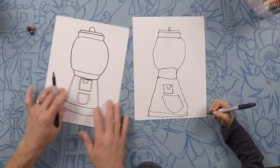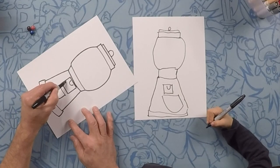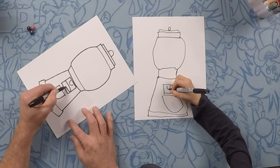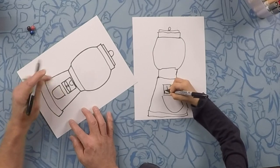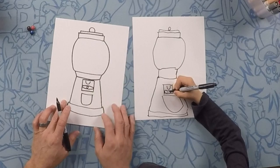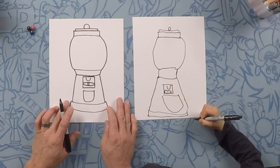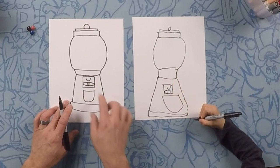Perfect. One thing we need right here is the handle. So for the handle, let's just do like an oval. That's going to be your handle and do a little circle right in the middle of that. That's the one you crank to get the gumballs out. That is awesome. That's so perfect.